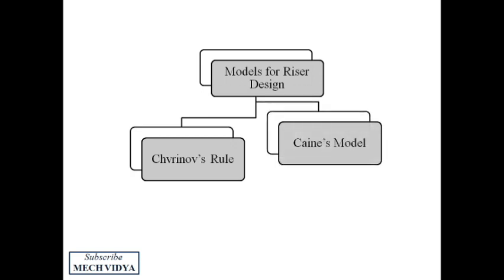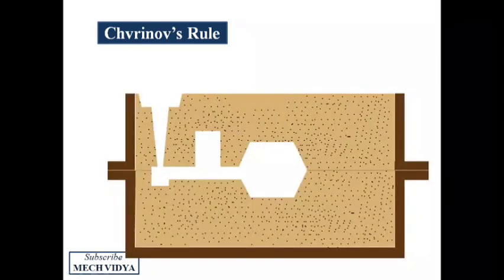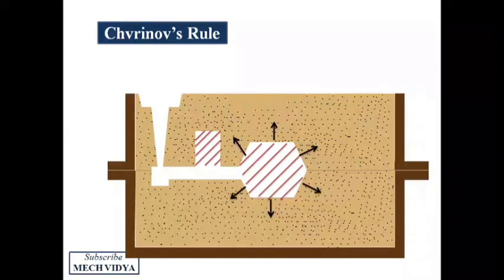So the Chvrinov's model says that the time required for a volume of molten metal to solidify is directly proportional to the volume and inversely proportional to the surface area through which heat transfer is taking place. Here V is the volume of the molten metal and A is the surface area through which heat flows out. Here volume of casting refers to this casting, and volume of riser refers to this entire volume of the riser. And the surface area of the mold refers to all these areas through which heat will flow out from the casting.